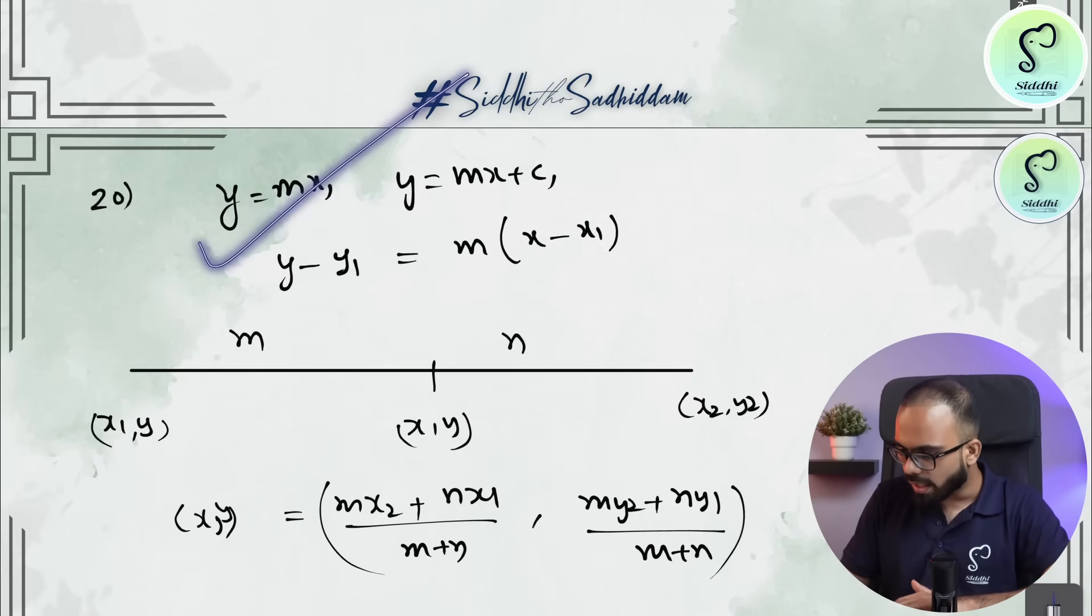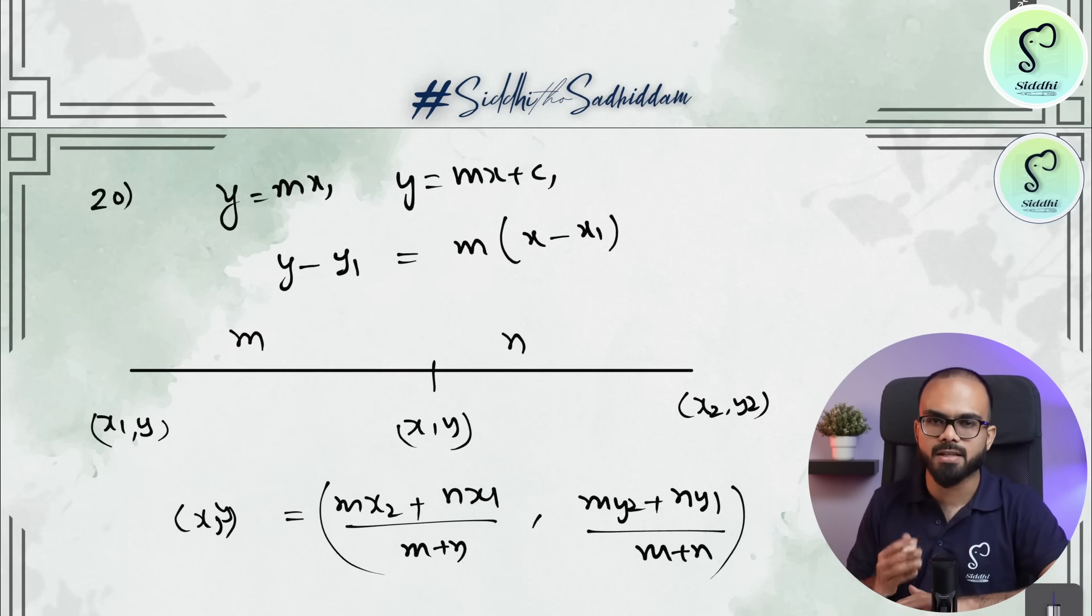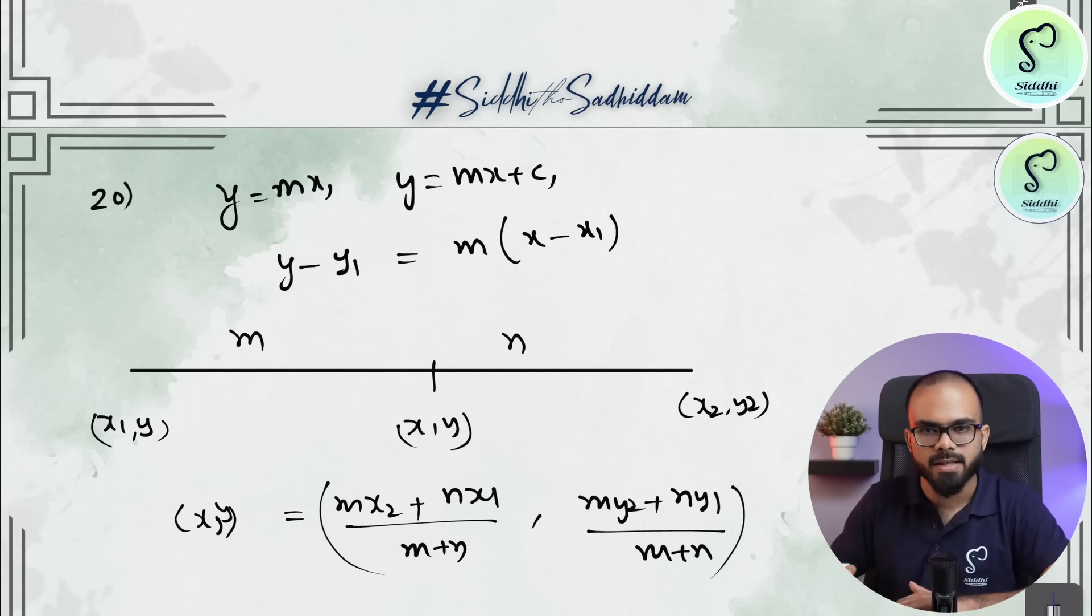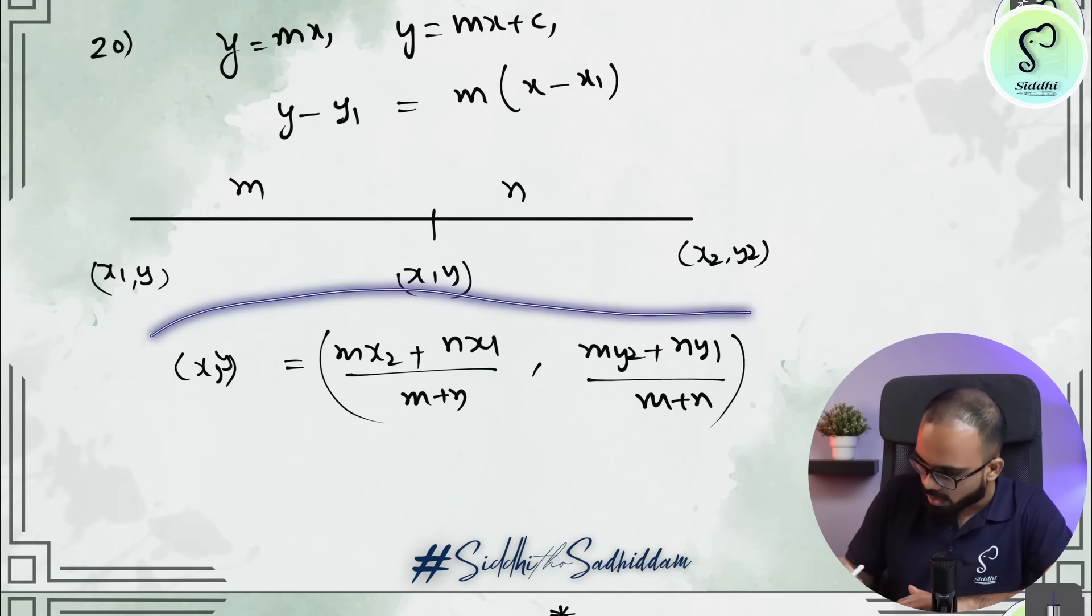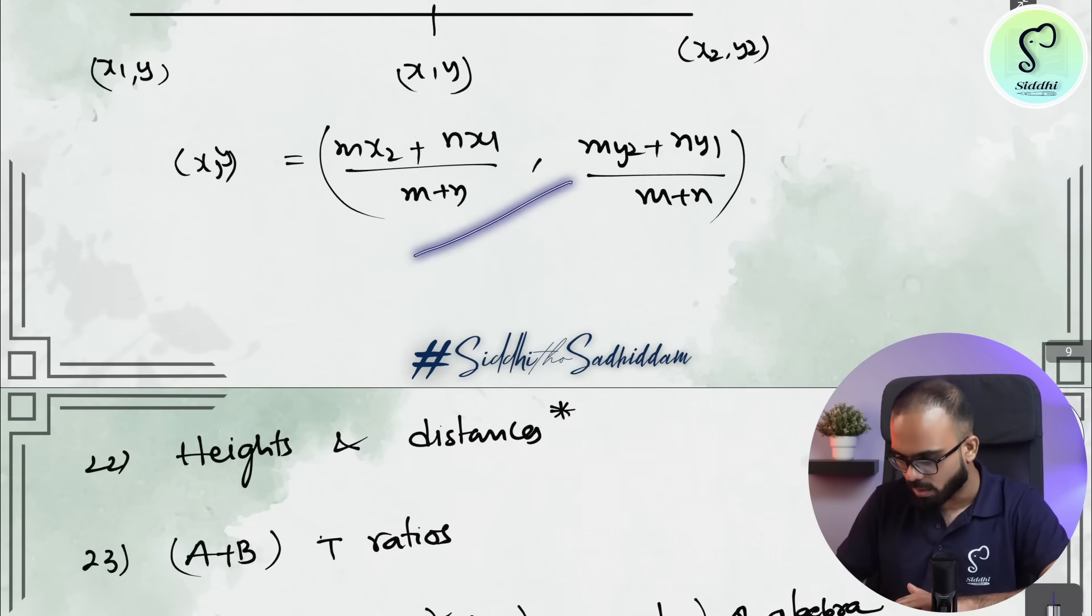In coordinate geometry, Y is equal to MX, Y equal to MX plus C, Y minus Y1 is equal to M into X minus X1. And the questions on section formula that is MX2 plus NX1 by M plus N type of formulas.